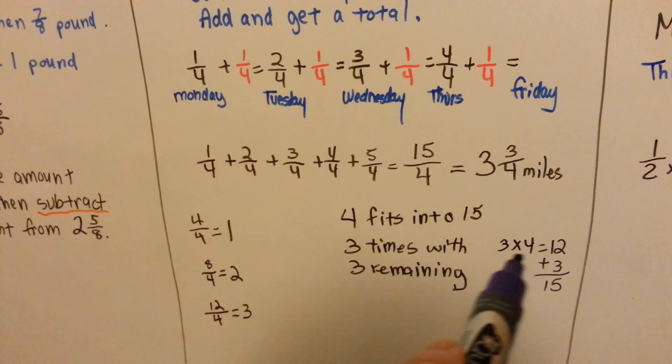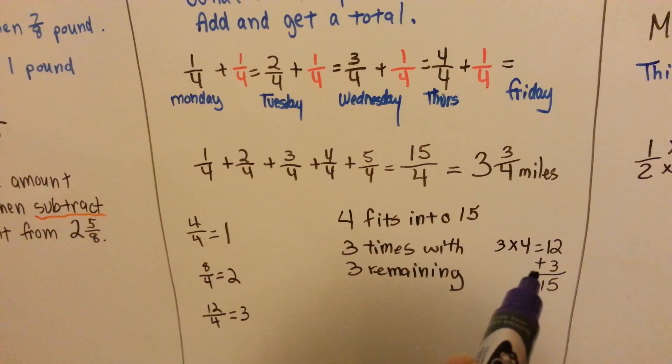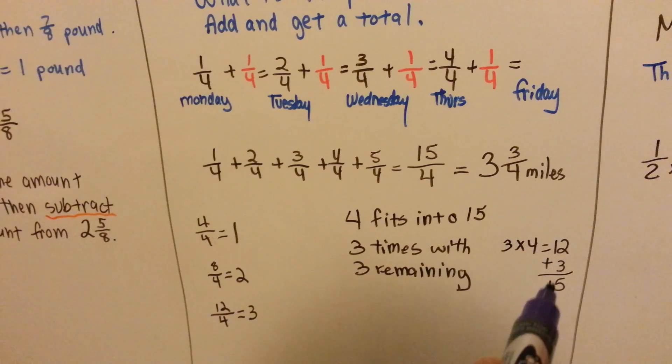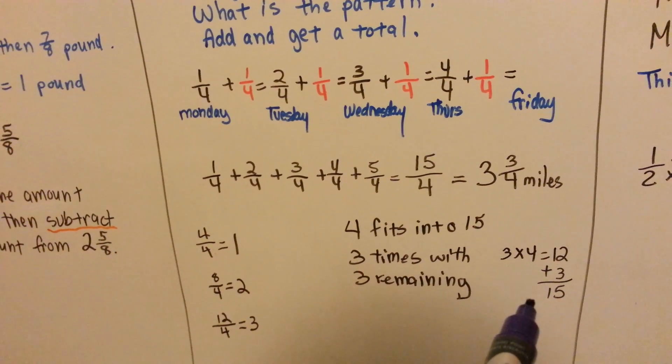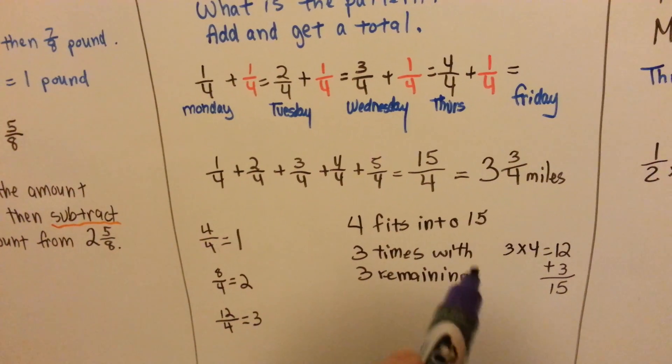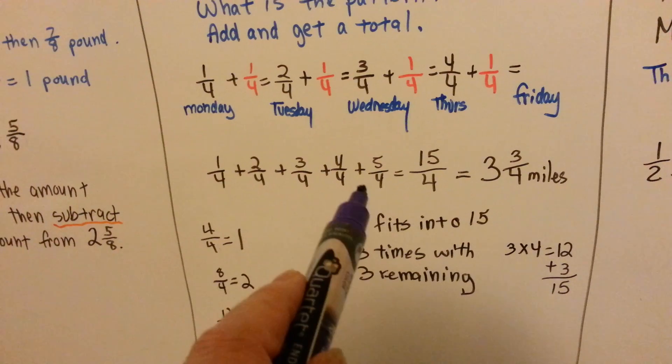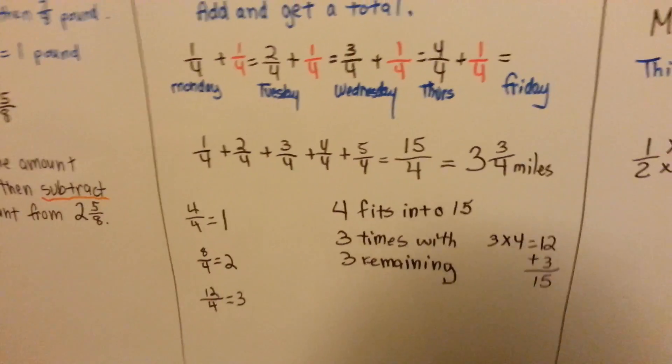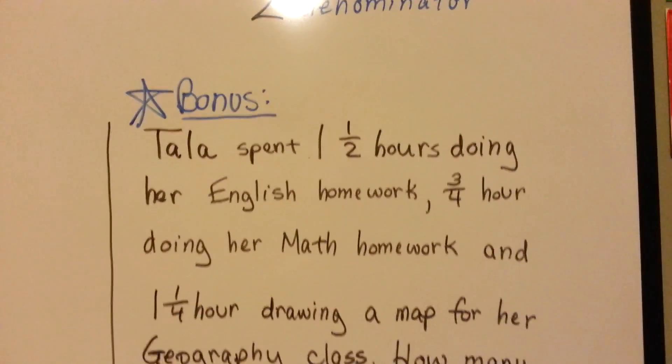4 fits into 15 3 times, because 3 times 4 is 12, and there's going to be 3 remaining to make the 15. So we know she walked 3, and the remaining 3 goes over the denominator 4 as 3 and 3 fourths. If you want to try one that has a different denominator, see if you can do this one with me.